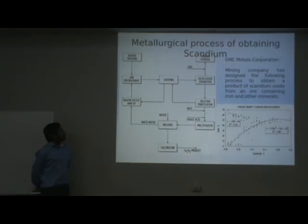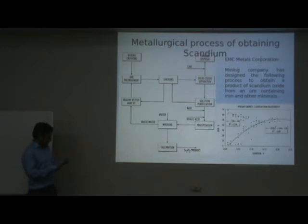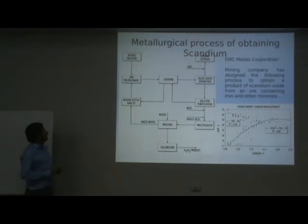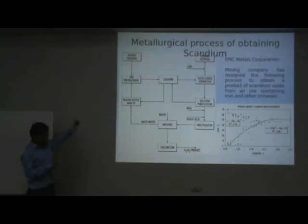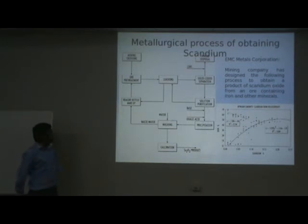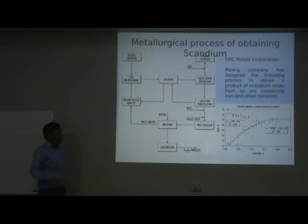The material processing of scandium begins with the flowchart to understand the process. The process begins with mining of the raw material. This is a picture of limonite material, which produces a selective absorption of scandium in the limonite component.